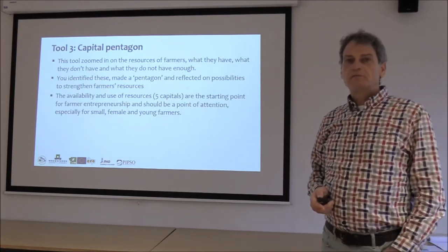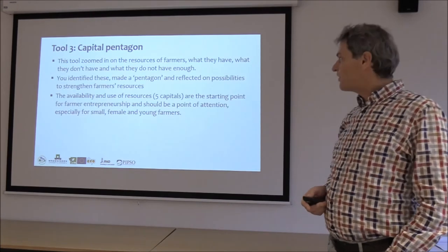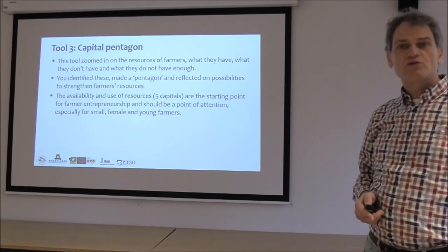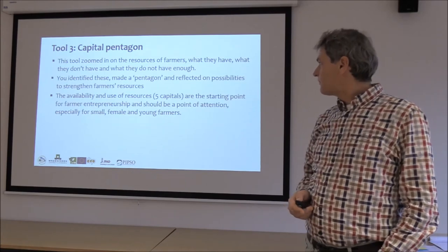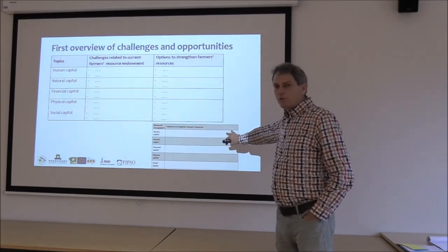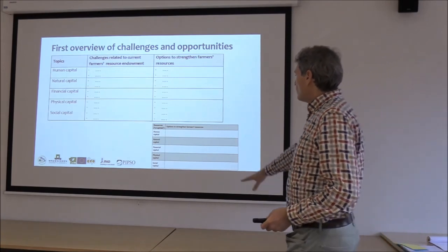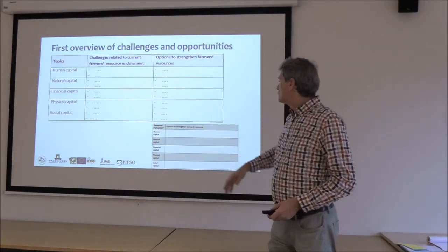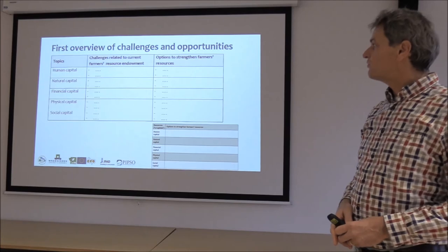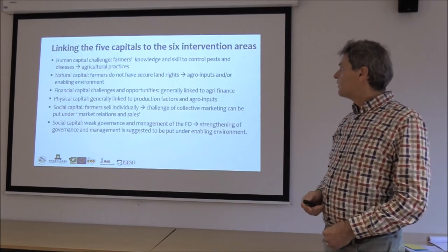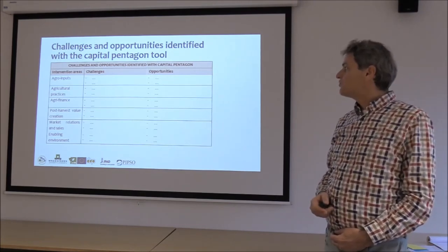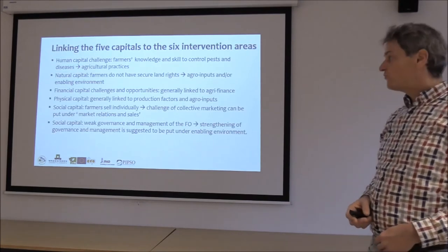The third tool is the Capital Pentagon, which looks at the resources that farmers have: financial, natural, physical, human, and social resources. One output of this tool is not only the visualization but also identifying the current situation and options to strengthen farmers' resources. Based on that, you can identify challenges related to the five capitals and opportunities, which can be transformed and linked to the six intervention areas — though a transition is needed between the two frameworks.